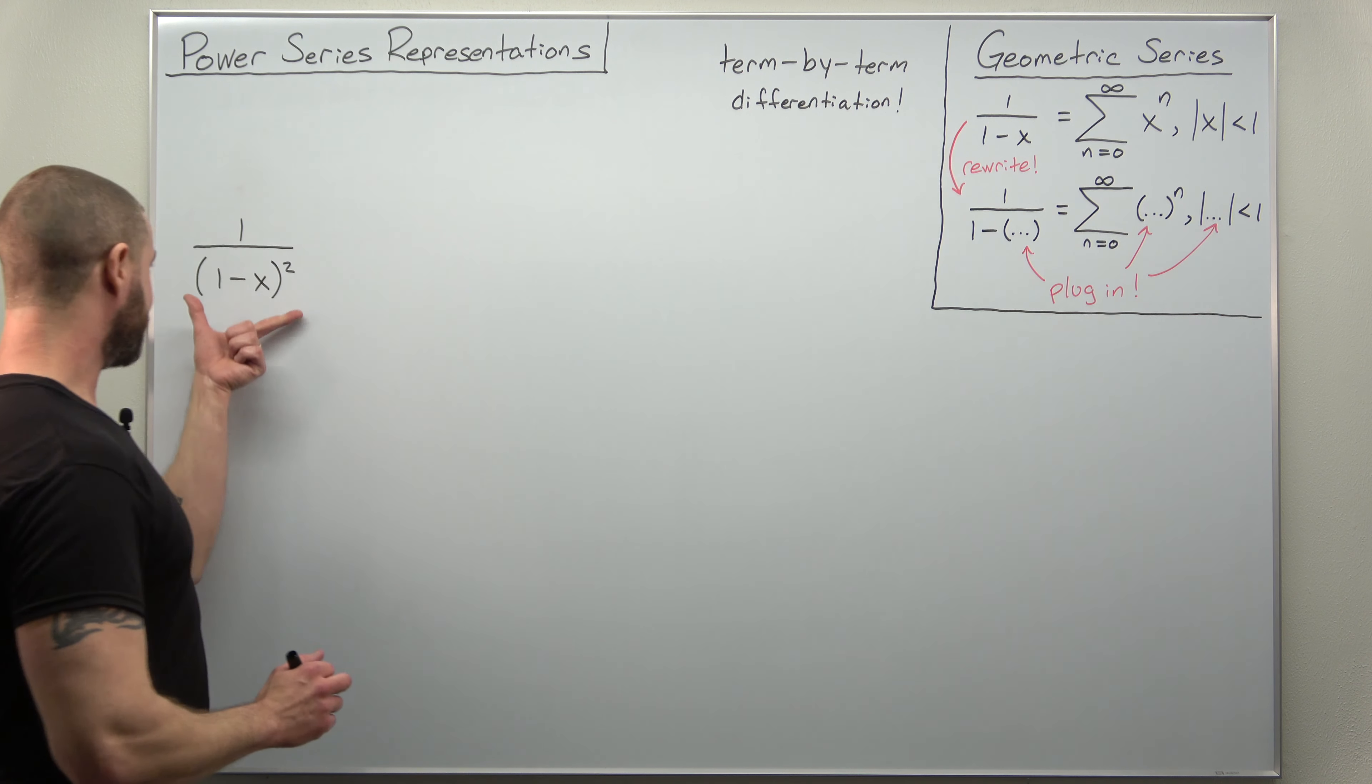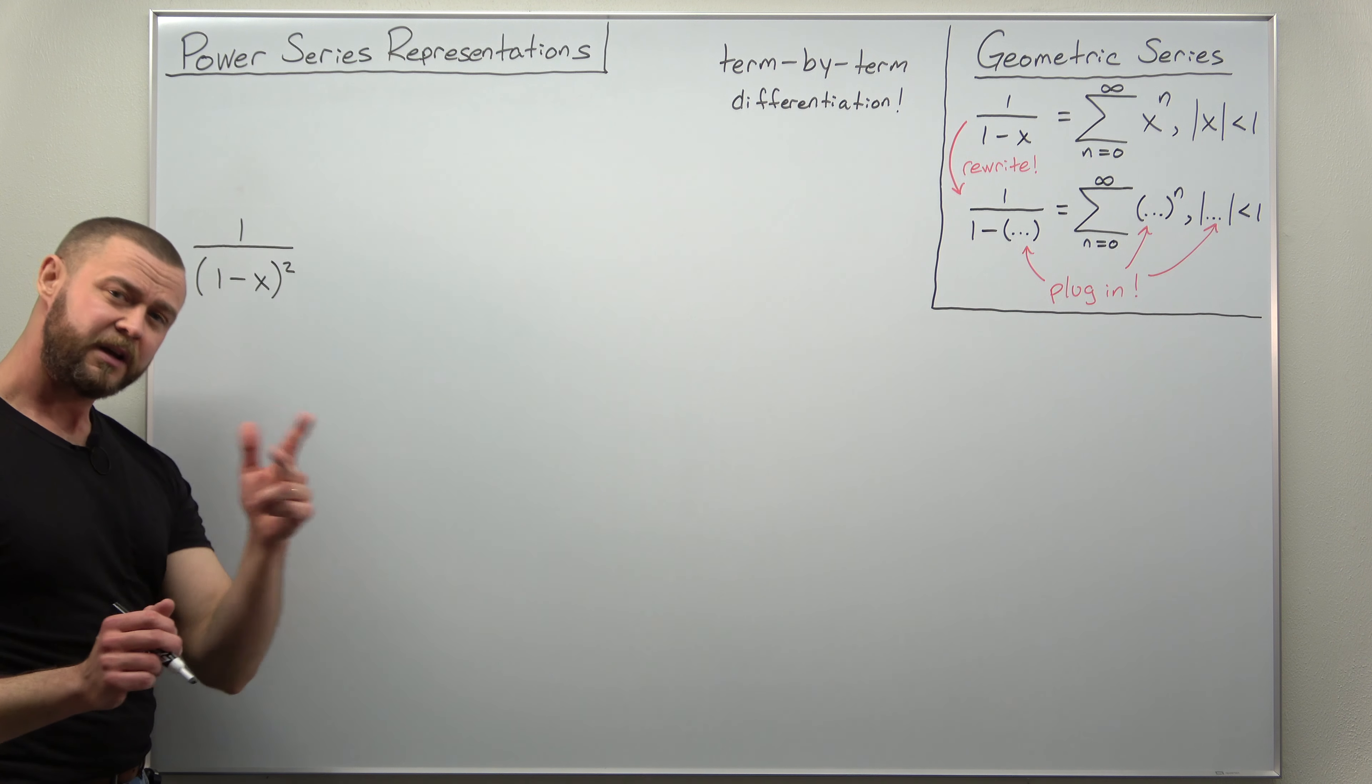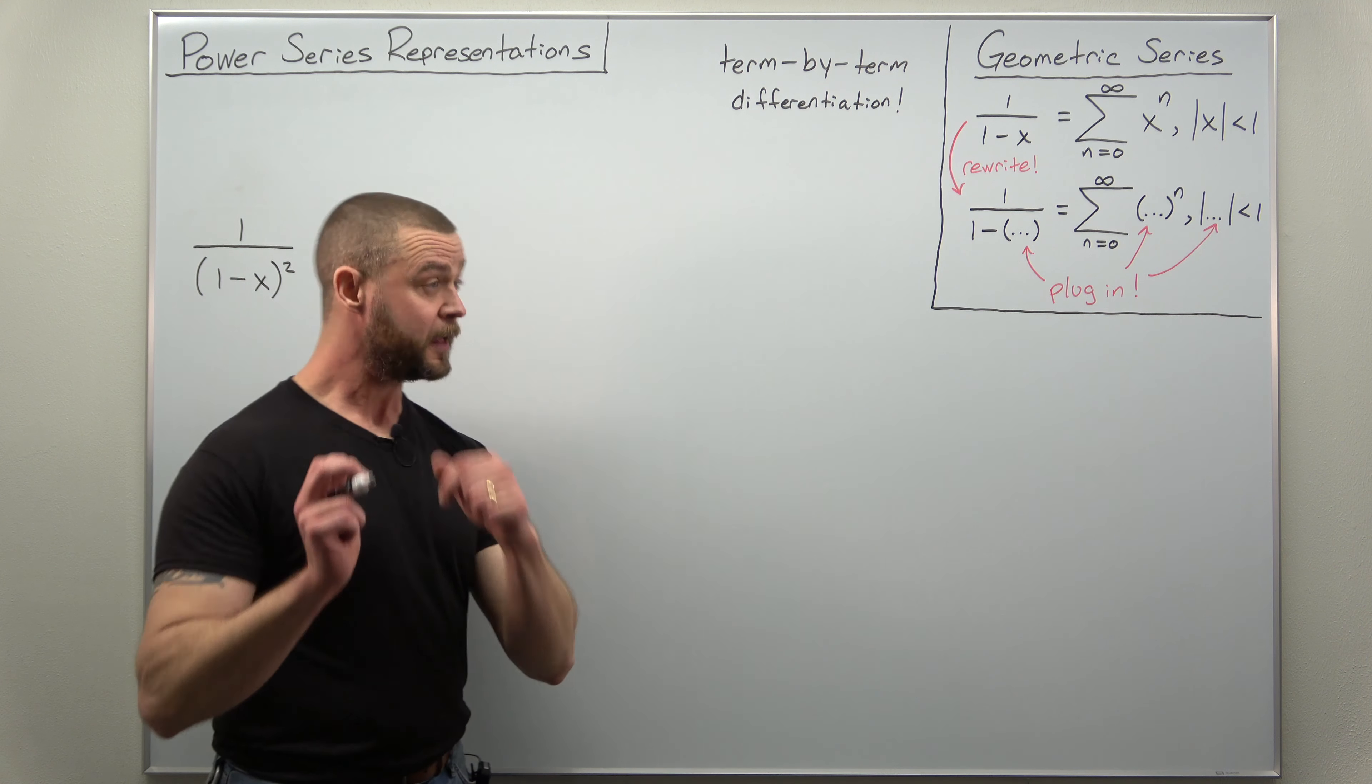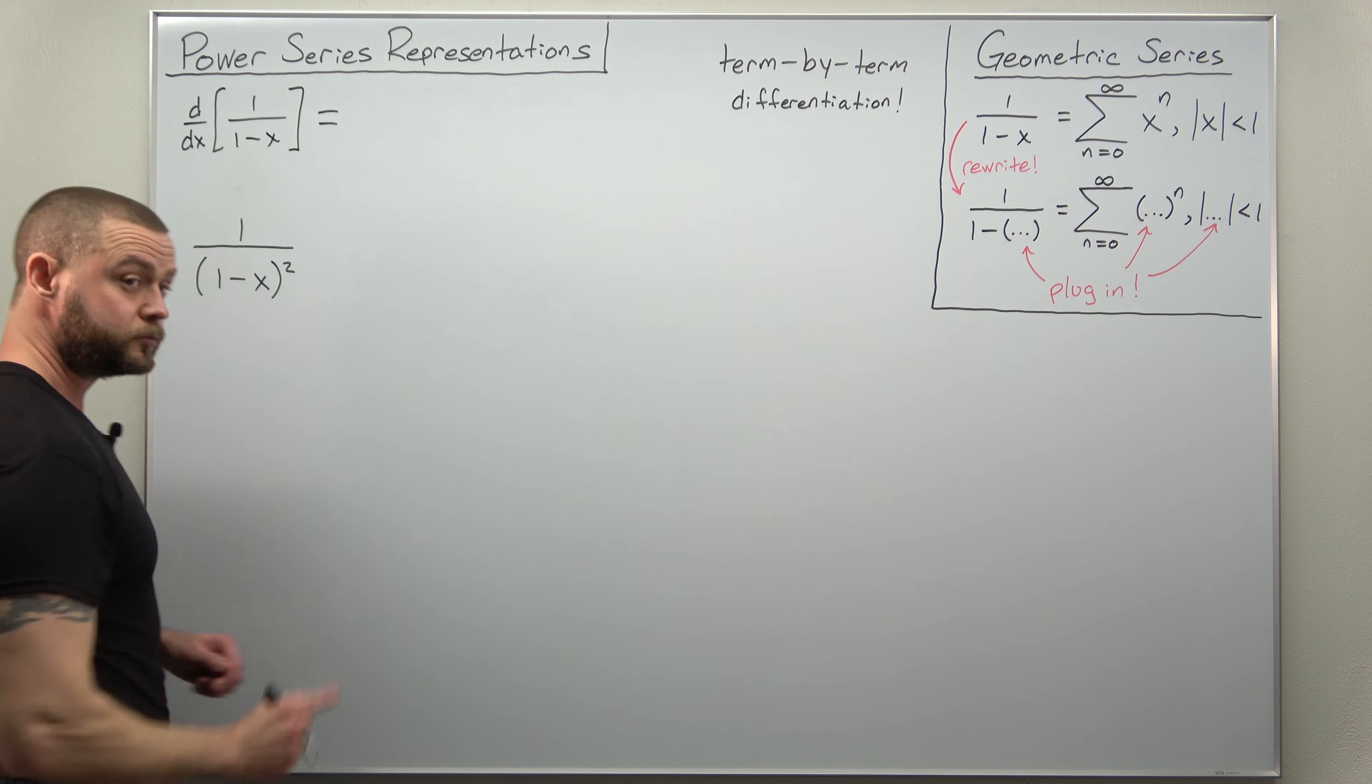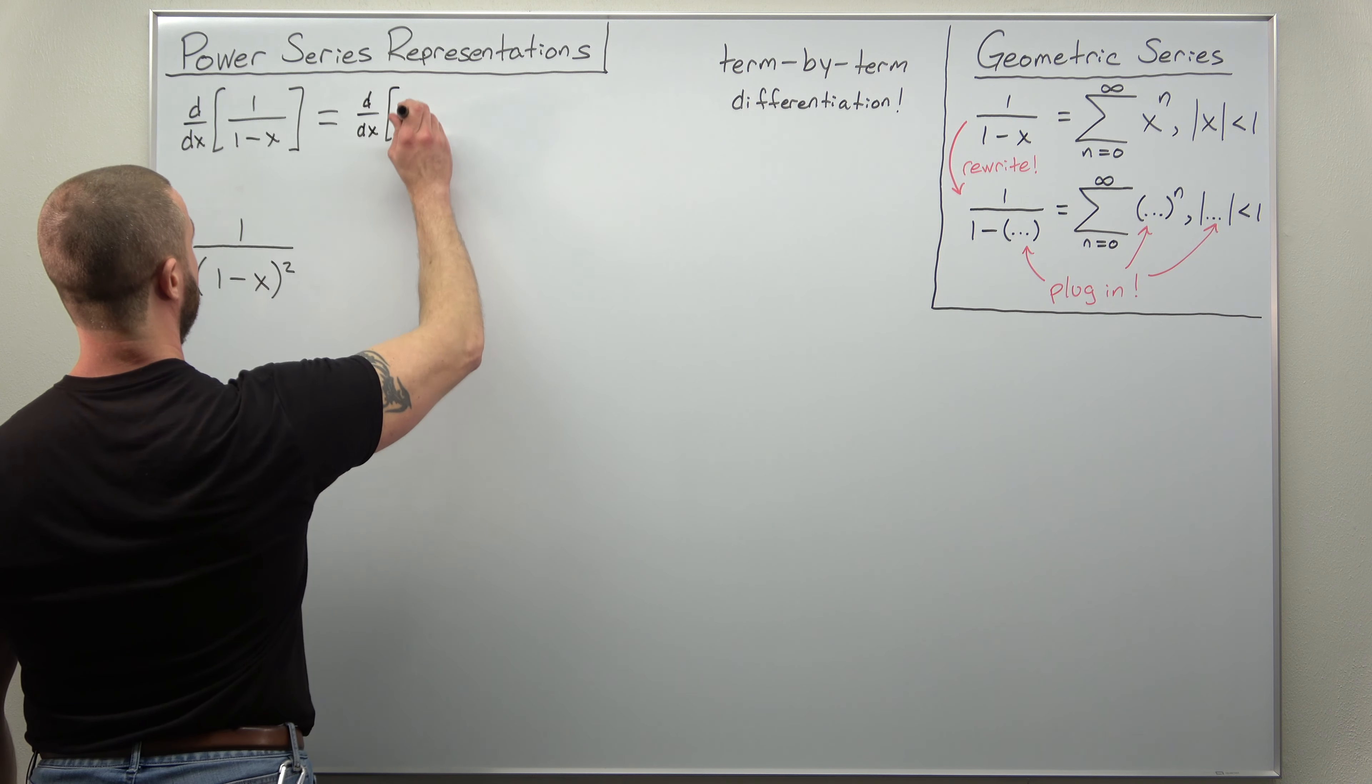So let's think for the function that we have here, 1 divided by 1 minus x squared, what might that be the derivative of. Now we don't have a lot of options at this point in your calc 2 course, you don't have a ton of functions that you know power series representations for. So let's just go ahead and try differentiating 1 divided by 1 minus x.